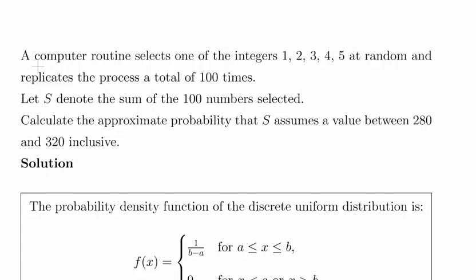In this presentation, we're going to look at the discrete uniform distribution and using the normal distribution to make approximations based on that distribution. A computer routine selects one of the integers 1 to 5 at random and replicates the process a total of 100 times. Let S denote the sum of the hundred numbers selected.